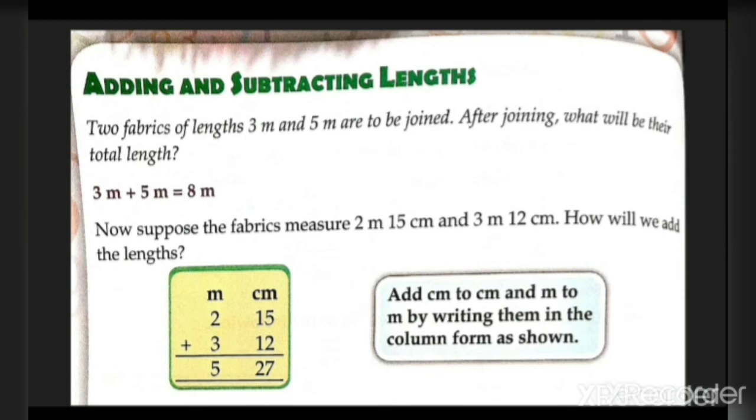If we have two fabrics, one is 2 meters 15 centimeters and the other is 3 meters 12 centimeters, how will we add the lengths? Meter on one side and centimeter on the other. 2 meters 15 cm plus 3 meters 12 cm equals 5 meters 27 centimeters.